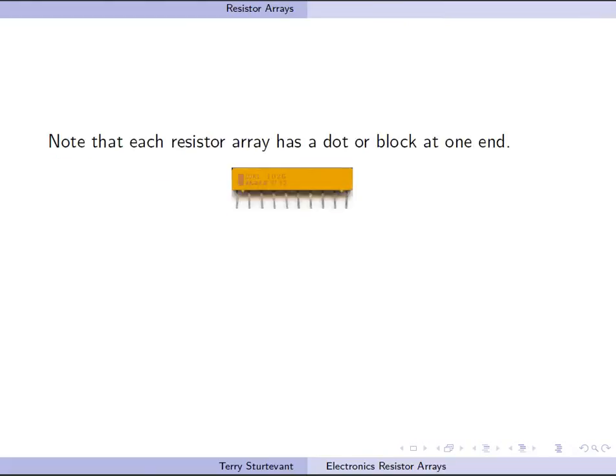Every resistor array, you'll notice, has a dot or a block at one end. That arrow points to the block. You see the block right above that pin. The pin at the end with the dot or the block is called the common pin.